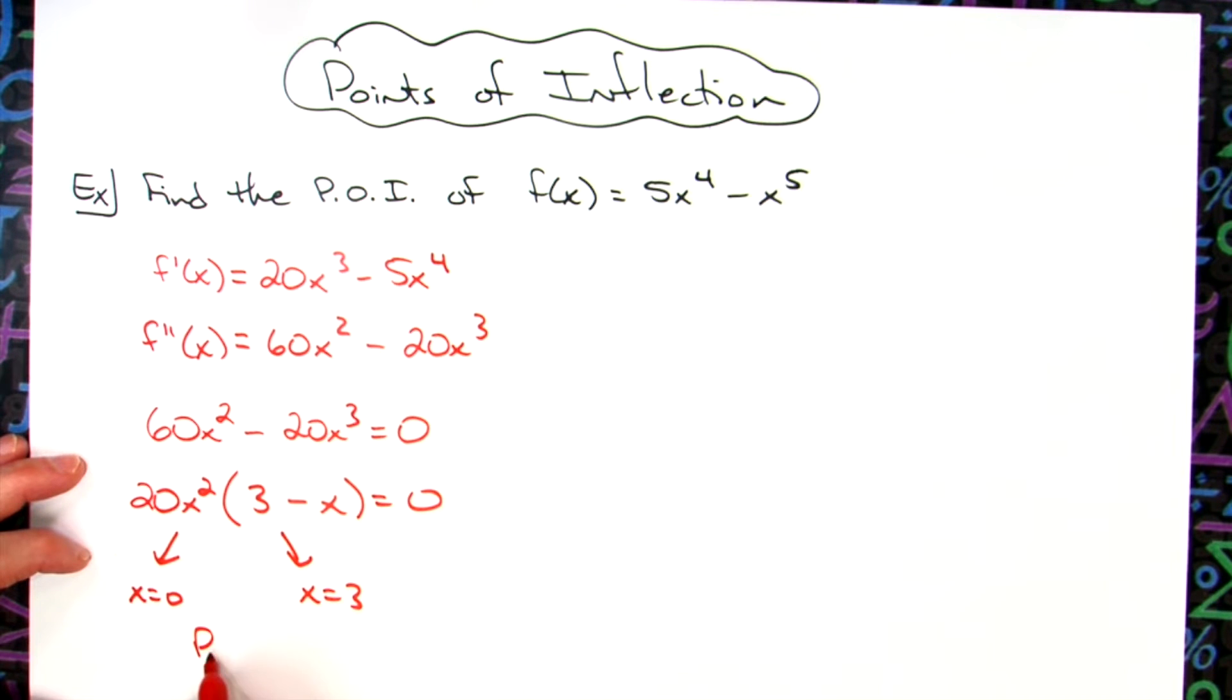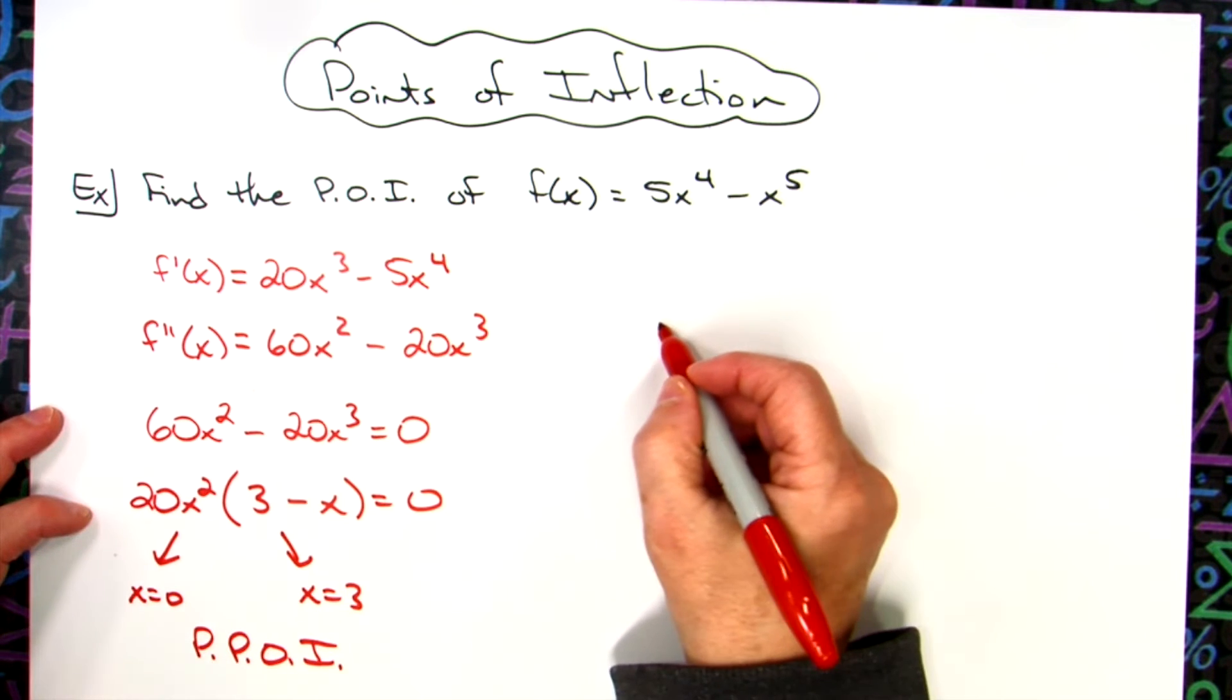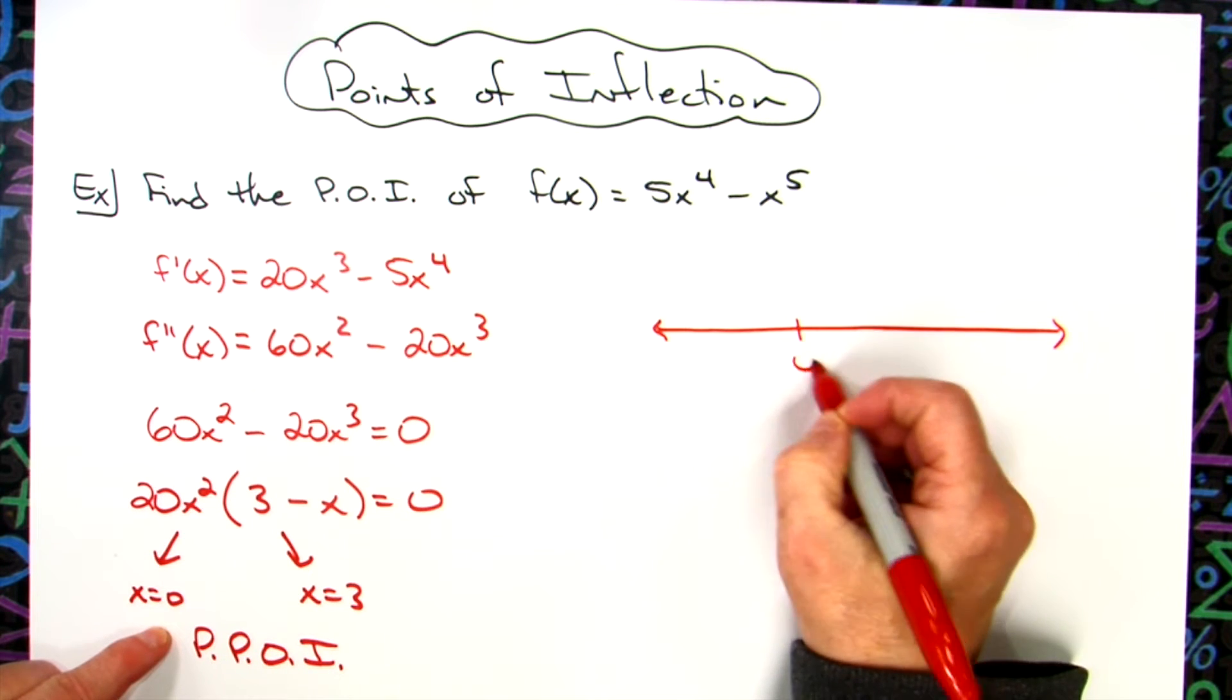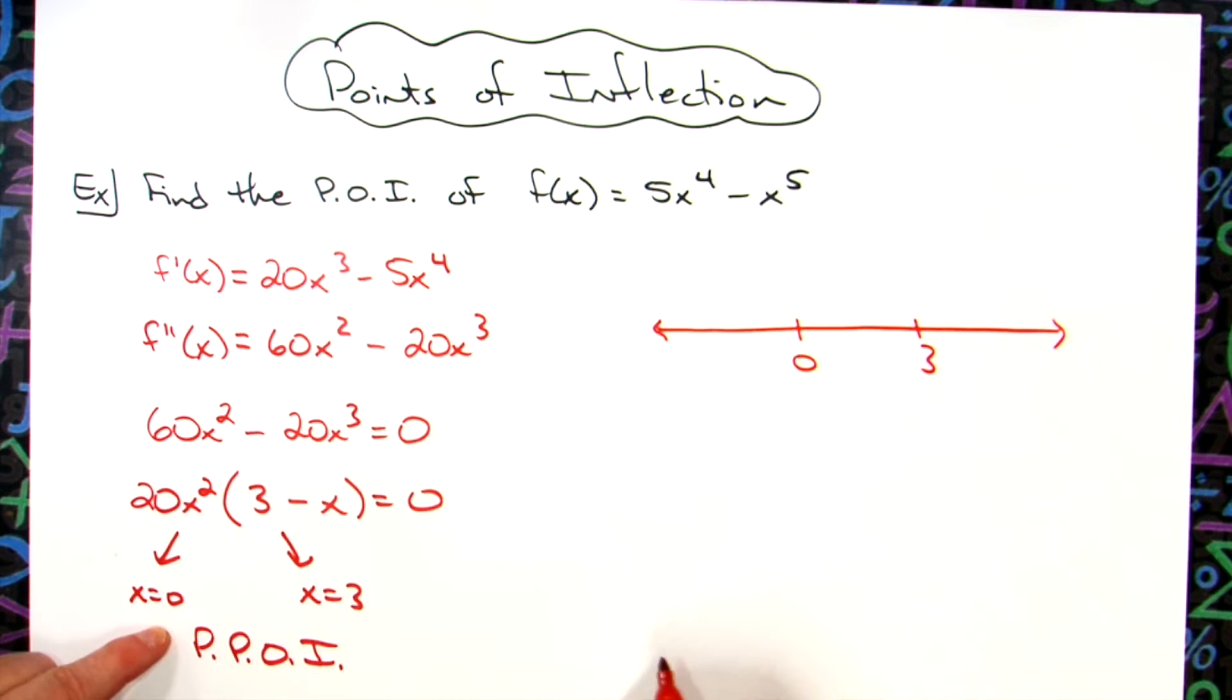So at this point, these are possible points of inflection. Now we're going to take a number line and analyze these possible points of inflection. We'll put zero on our number line and three on our number line.